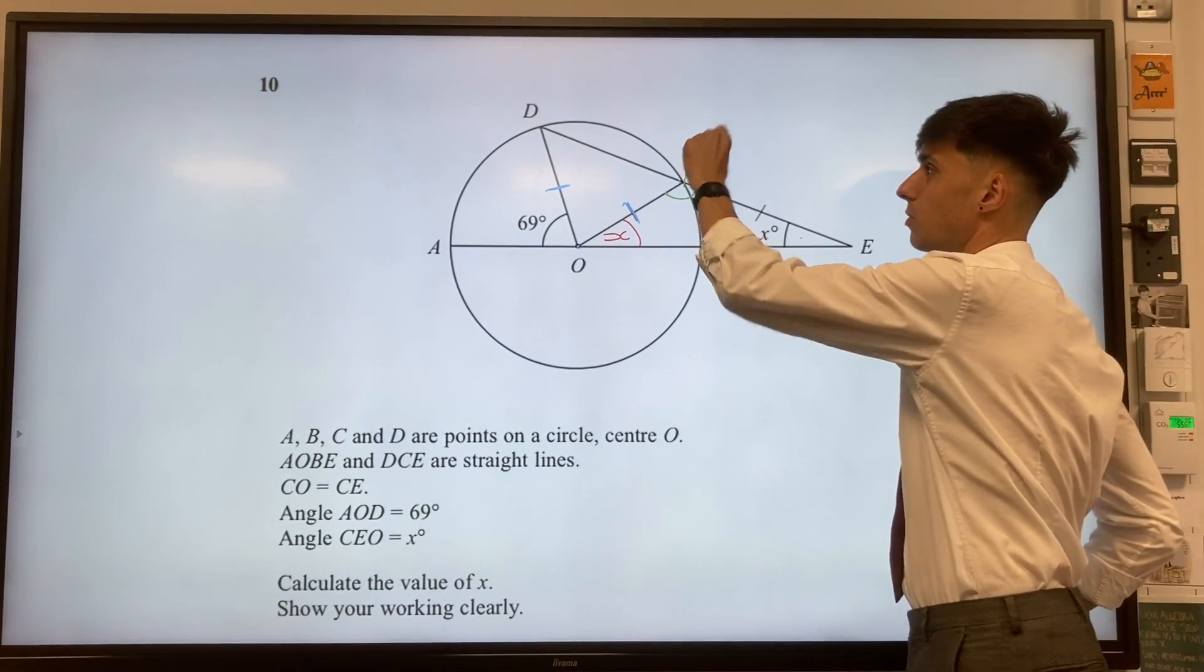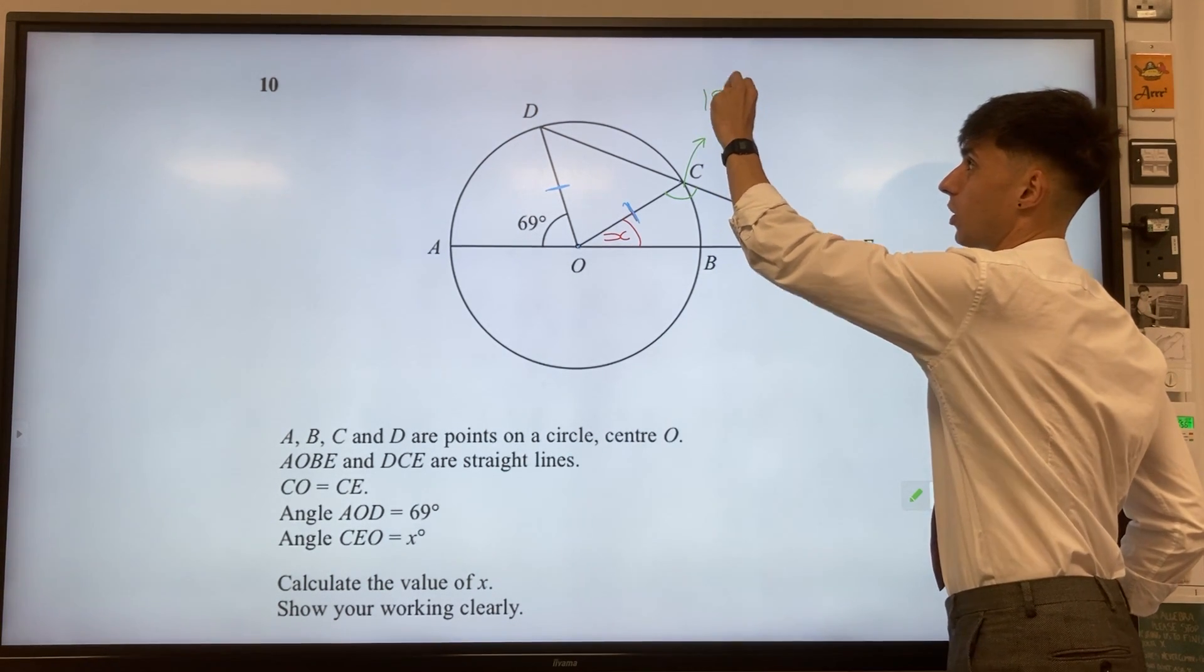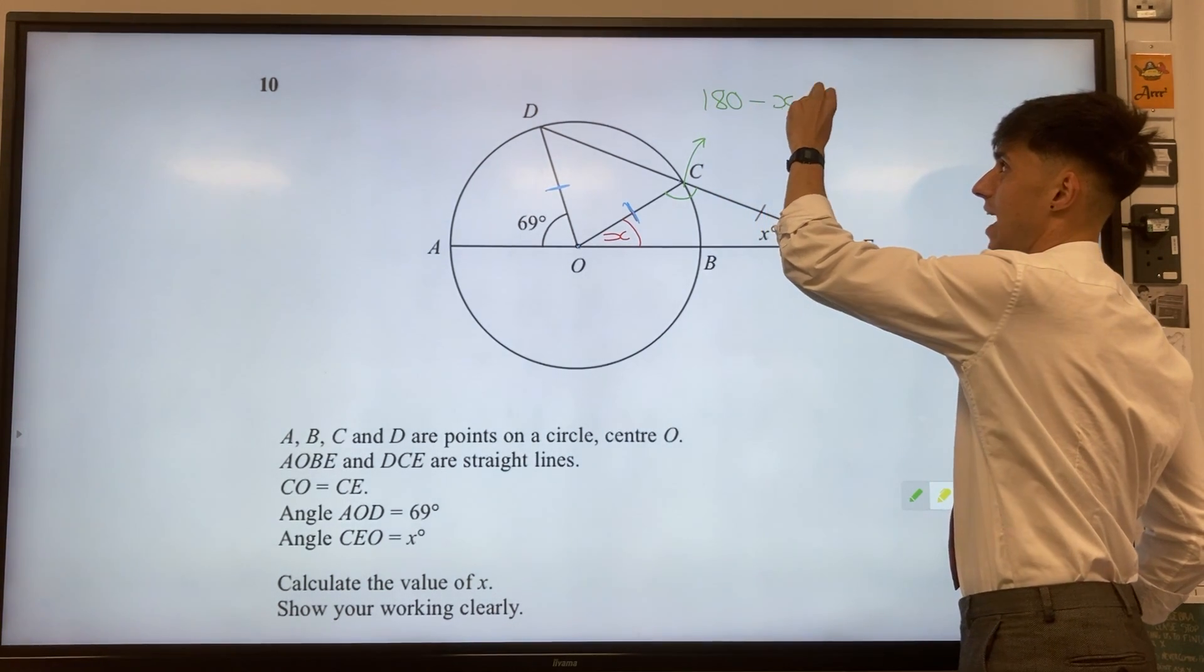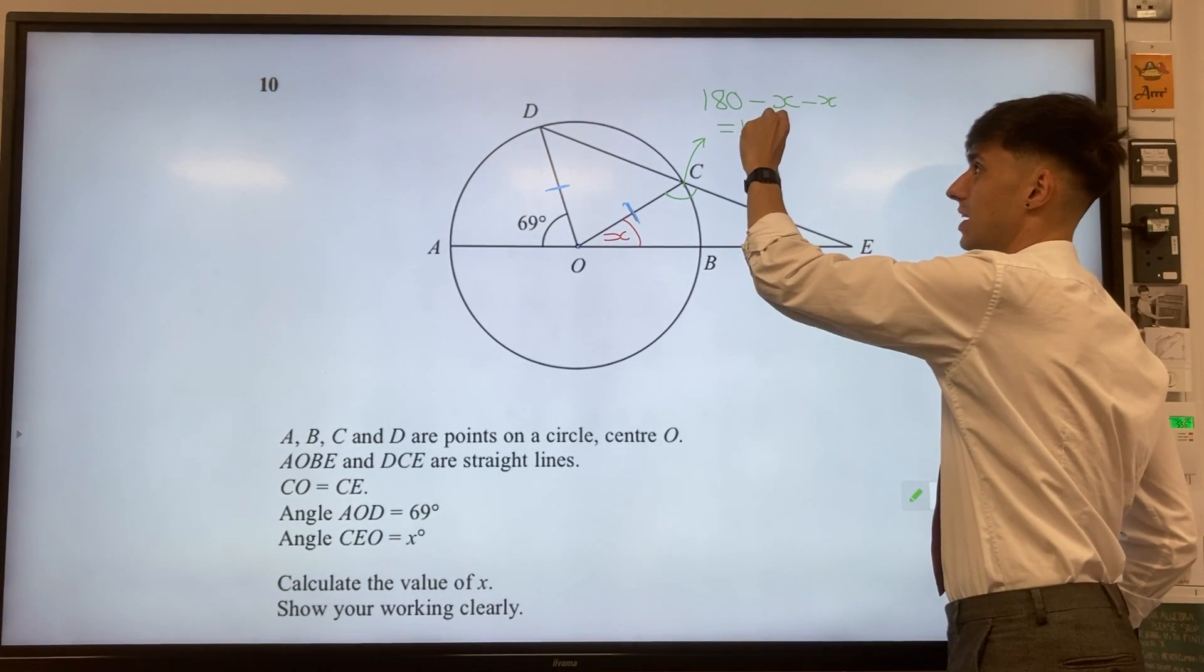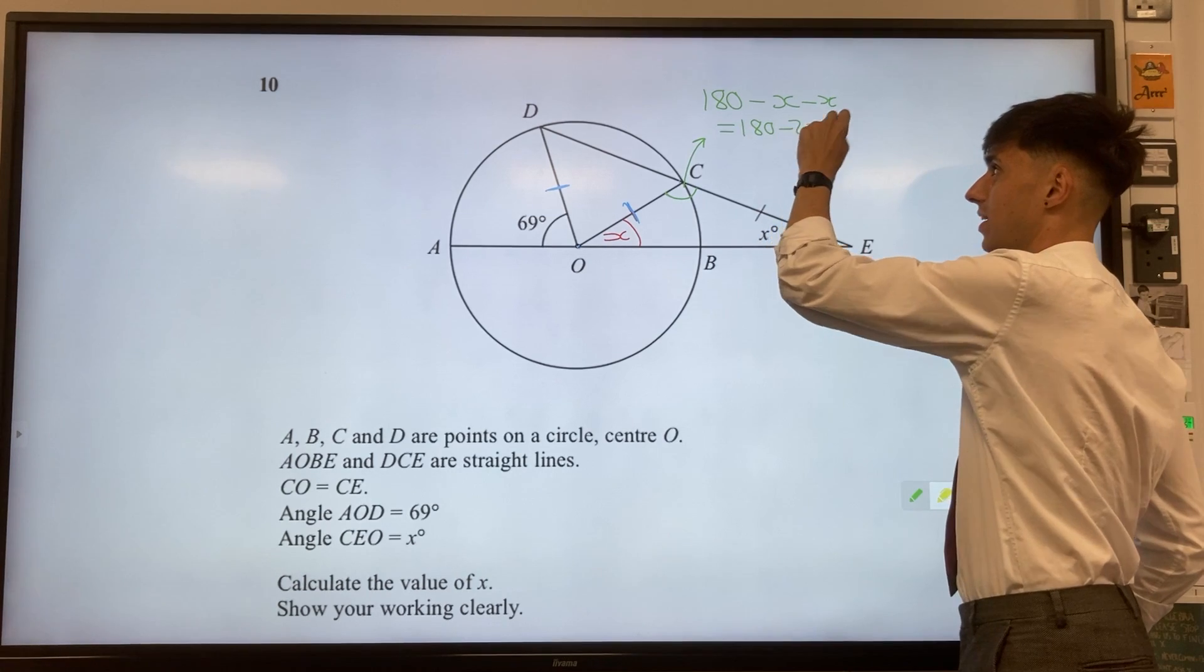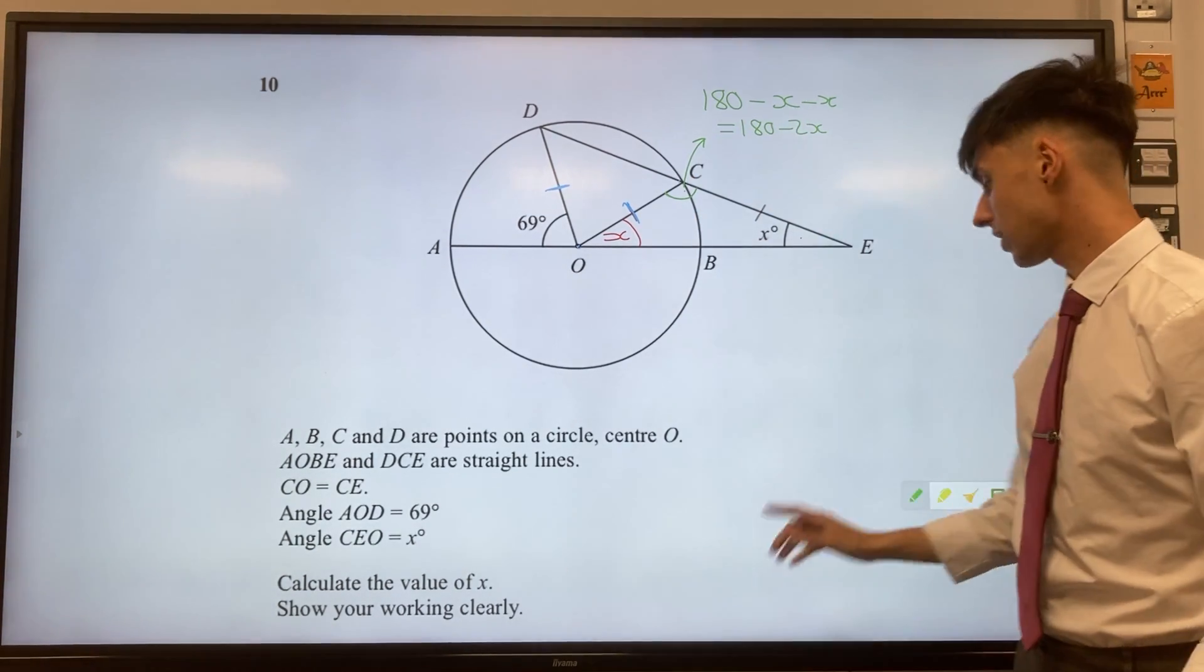Well we don't know any numbers so we're just stuck with saying 180 minus x minus x, or in other words 180 minus 2x. So this angle at C must be 180 minus 2x.